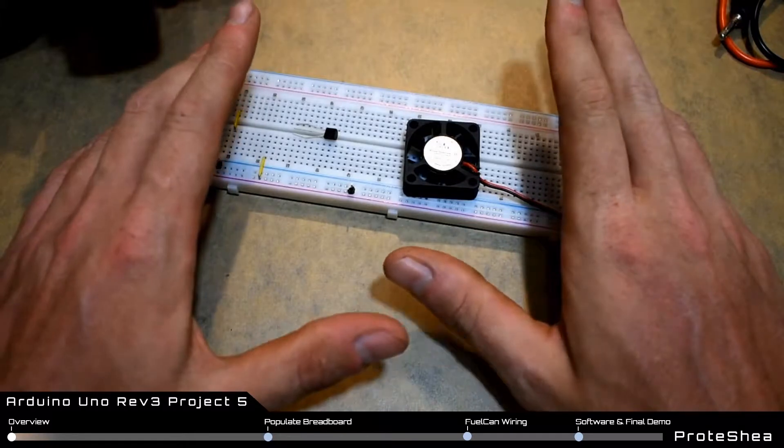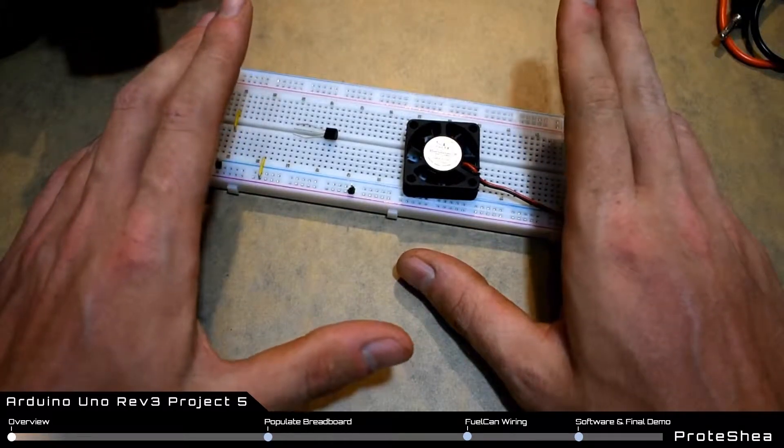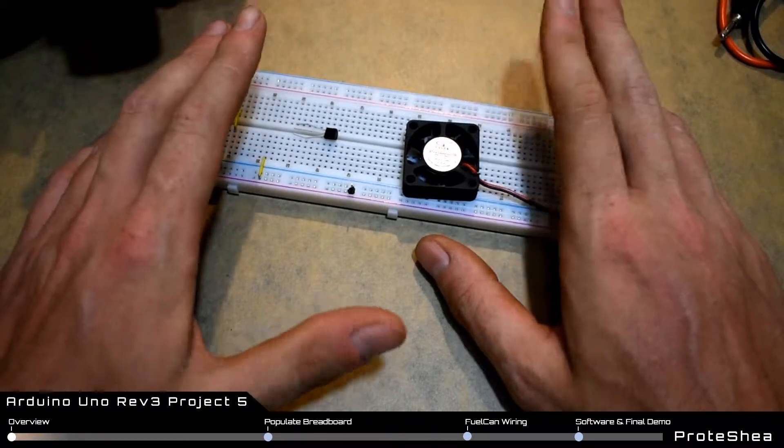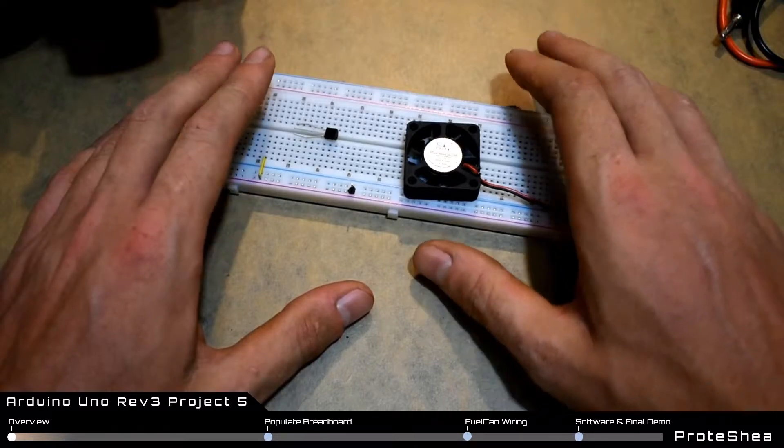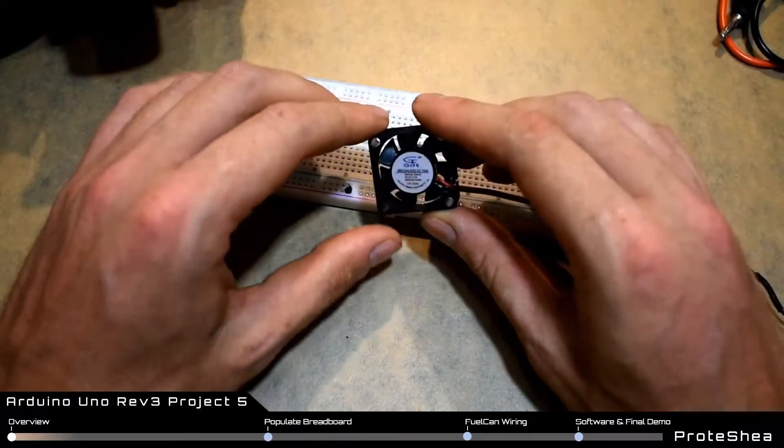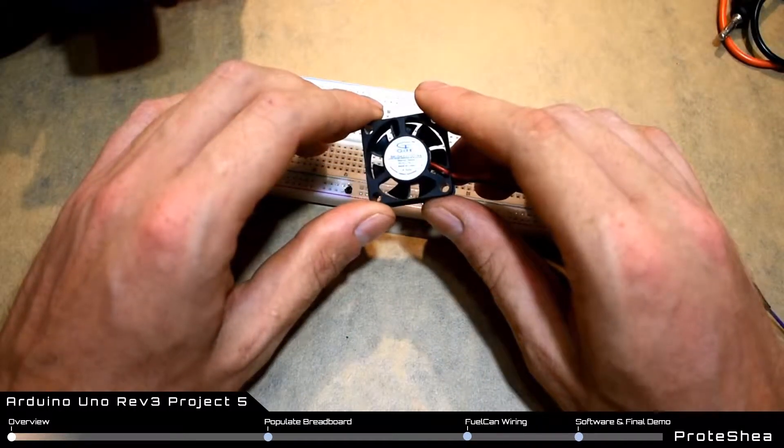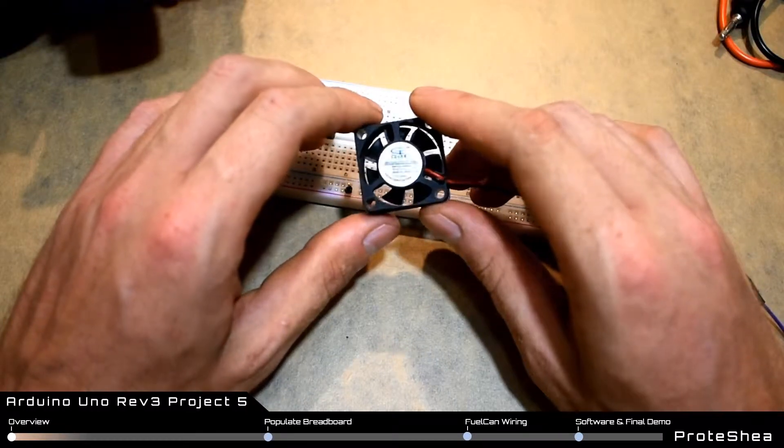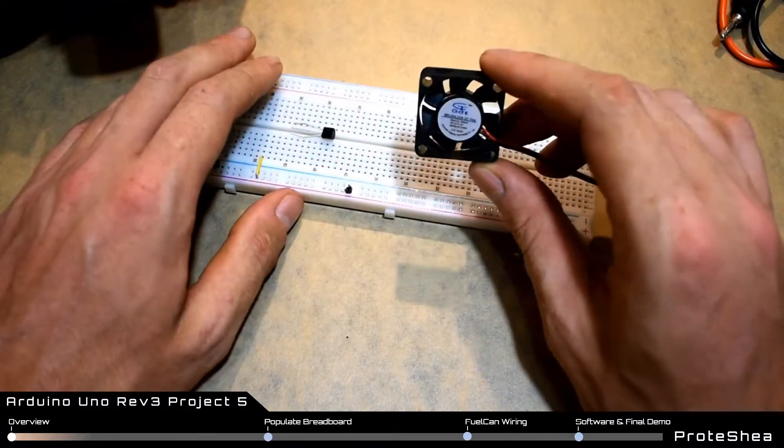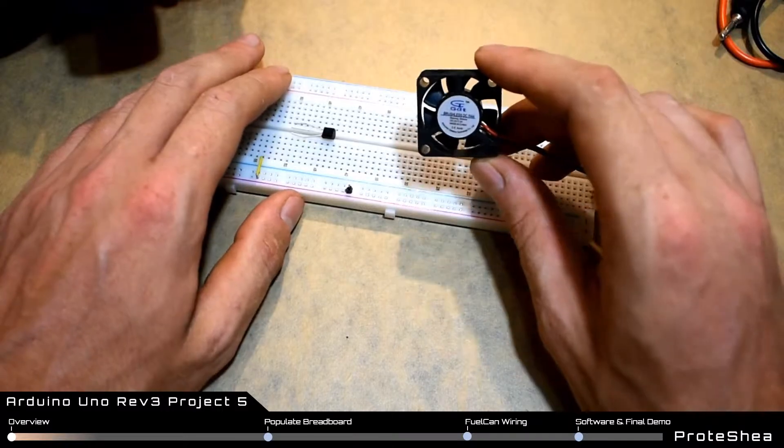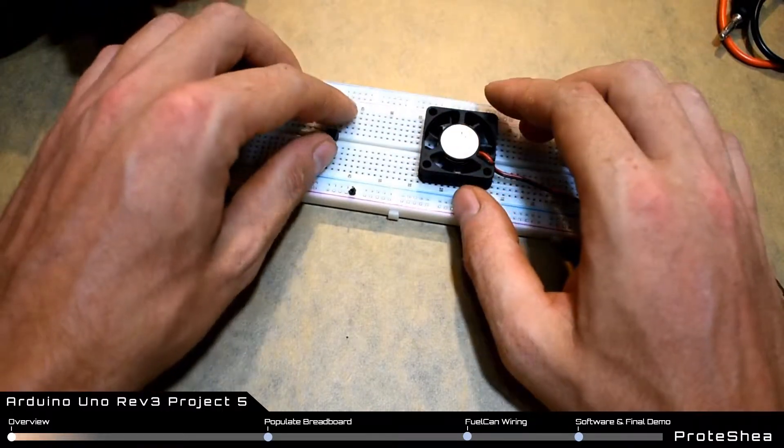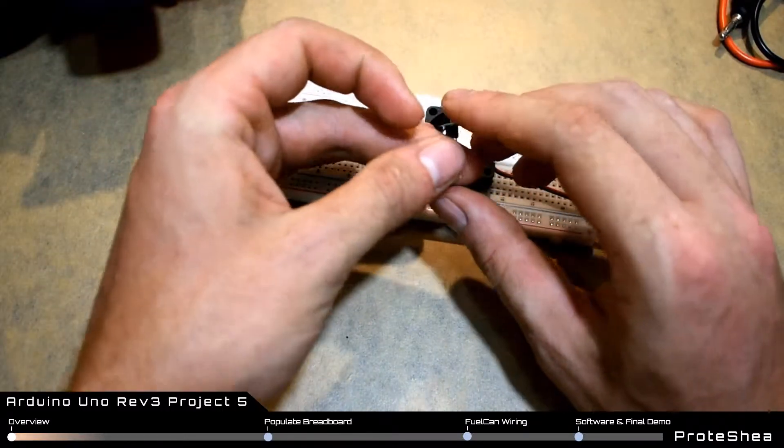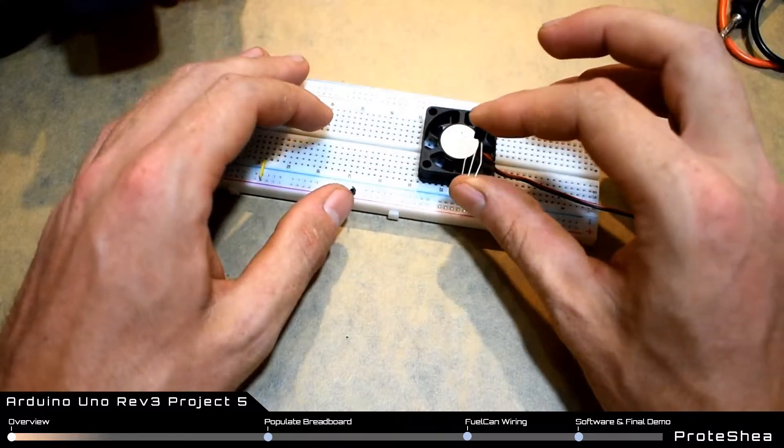If we're using a 20% safety margin, we want to stay around roughly 30 milliamps. This DC fan requires 200 milliamps at 5 volts, so we definitely can't drive this with one of the Arduino UNO pins. To drive it, we use an n-channel MOSFET.